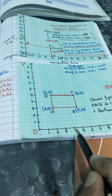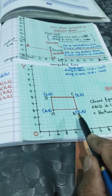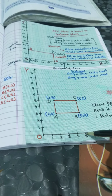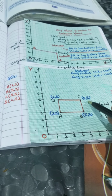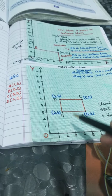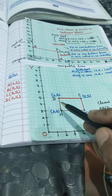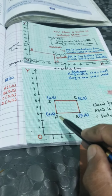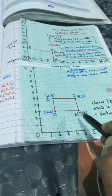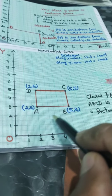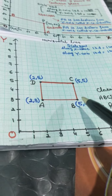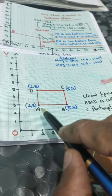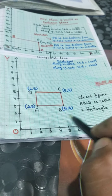Next, point C is (5,5): x is 5 and y is 5 — they meet at point C(5,5). Point D is (2,5): x is 2 and y is 5. Join A to B, B to C, C to D, D to A. This closed figure ABCD is called a rectangle, because AB contains 3 units and BC contains 2 units — the length and breadth are different. So this closed figure is known as a rectangle.